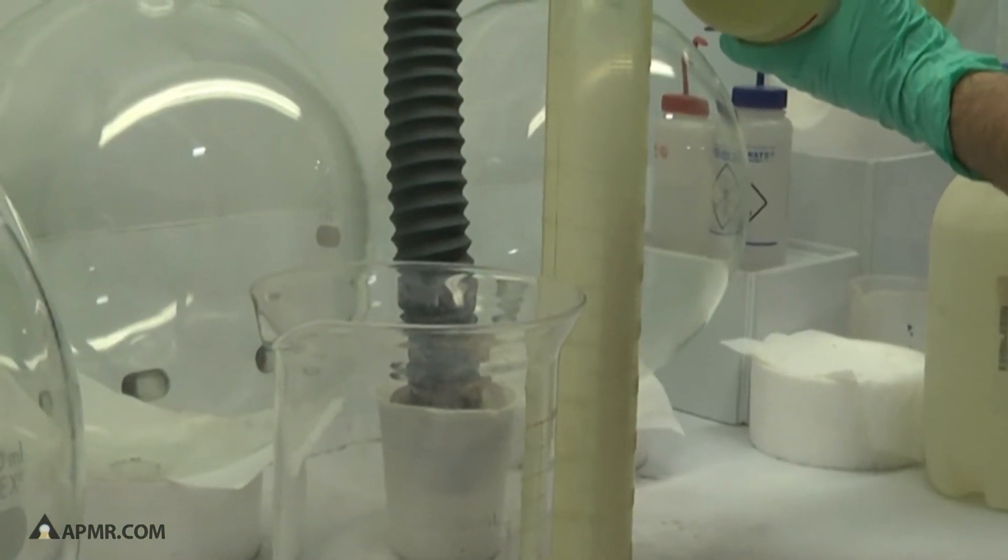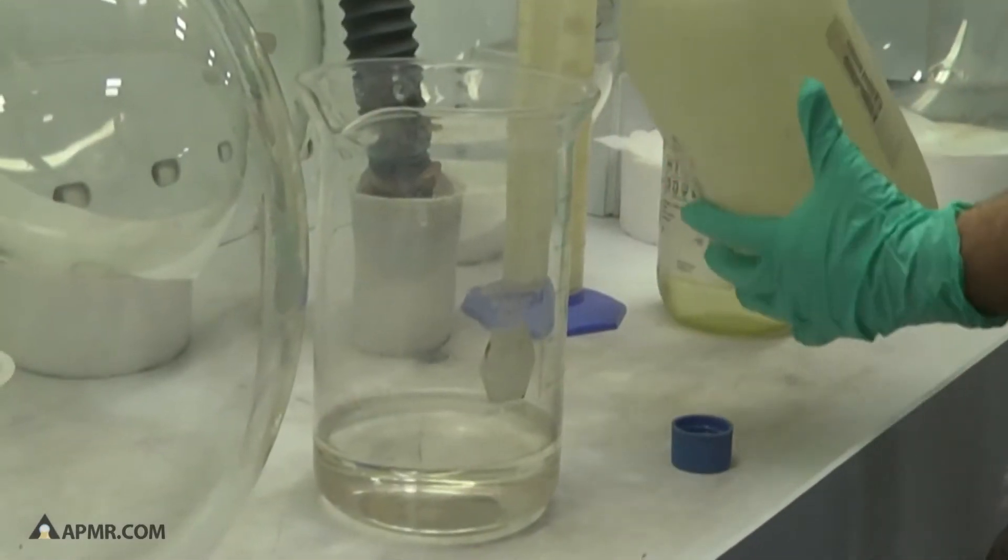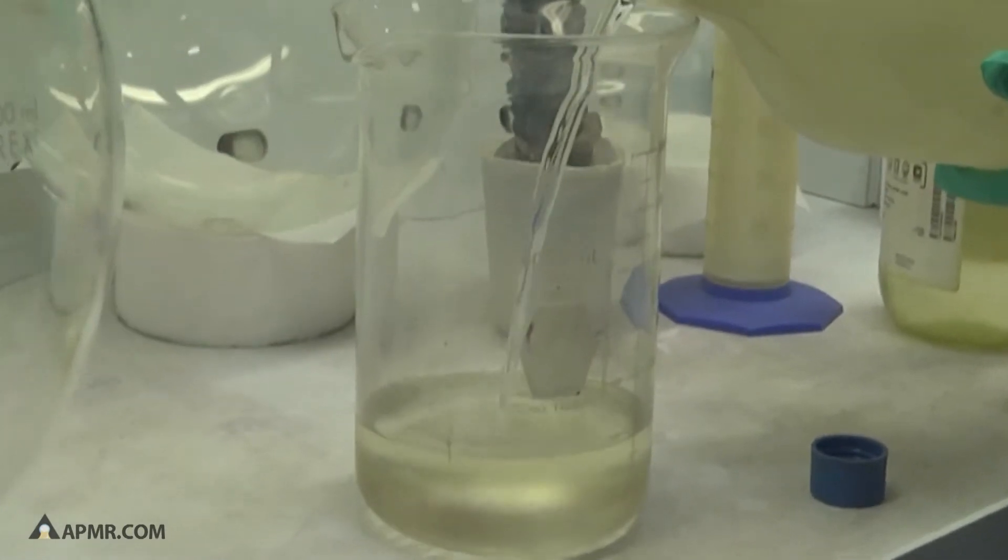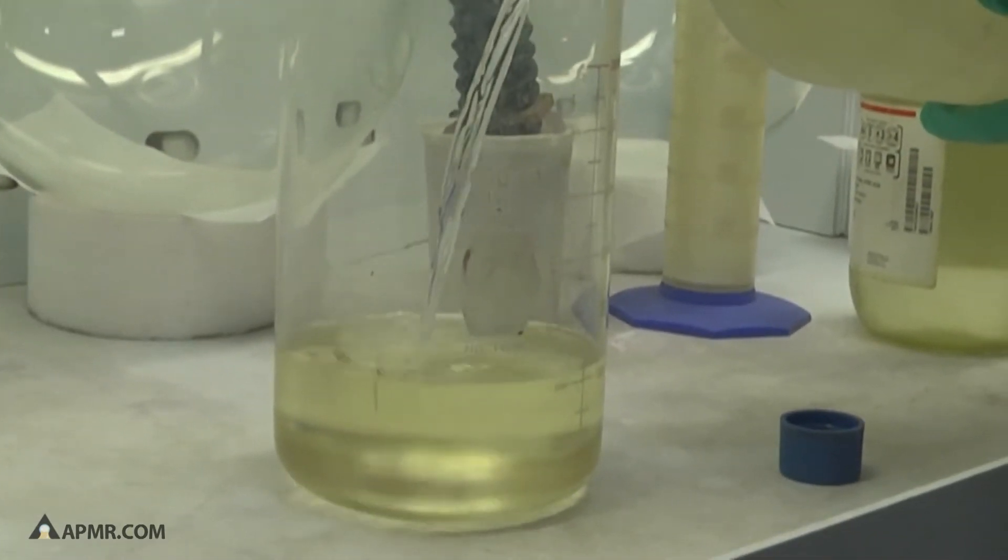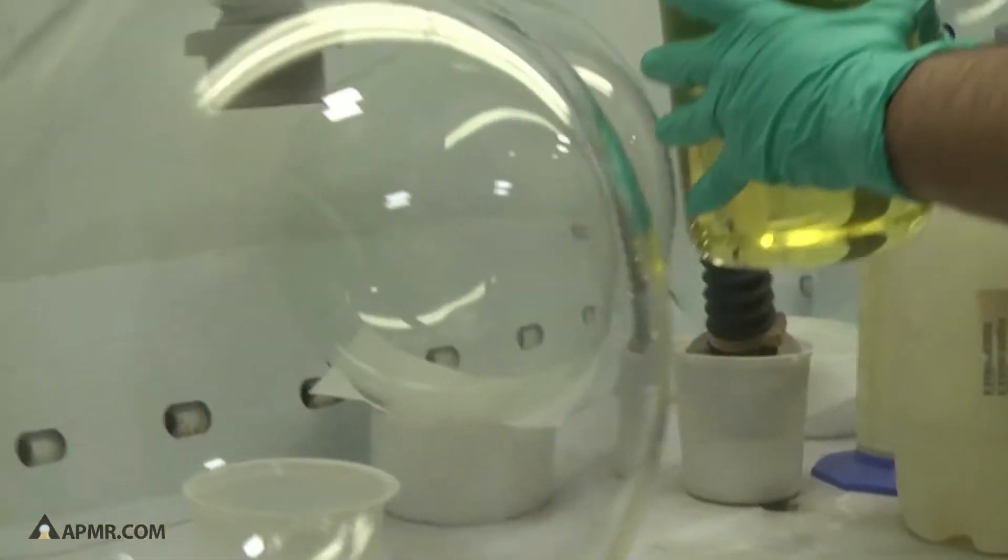We have some nitric that's being measured first. Next we're going to measure hydrochloric up to the required ratio. And now the acid is going to be added to the metal in the flask.